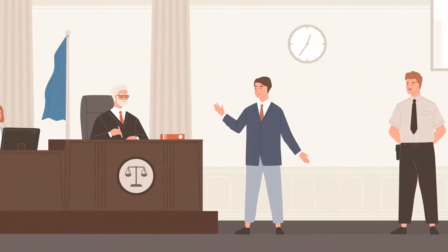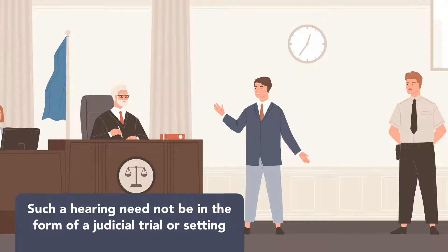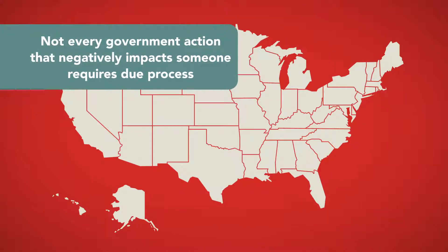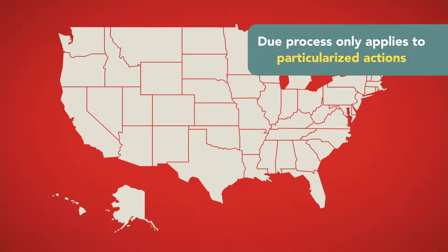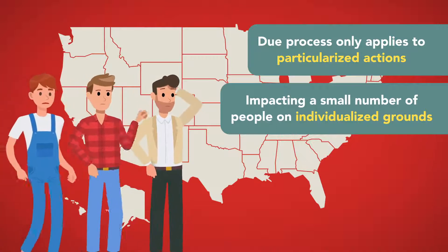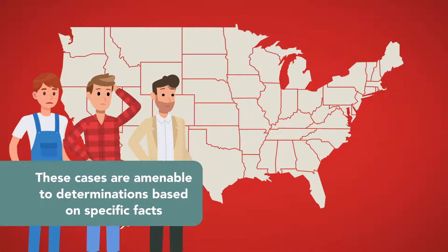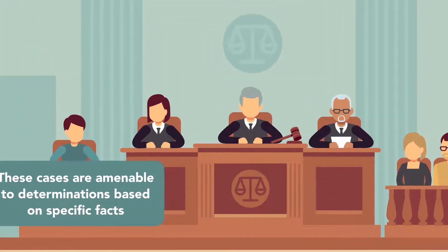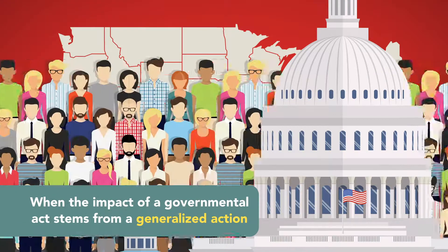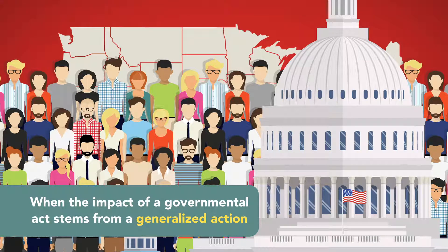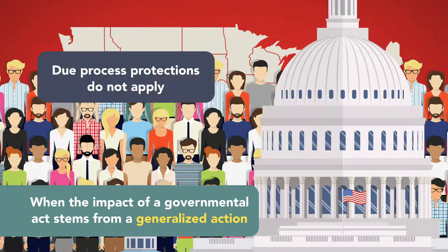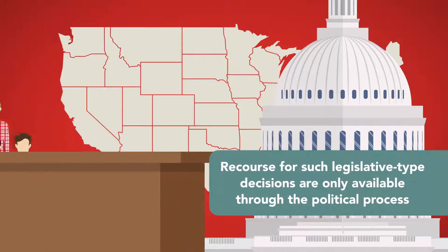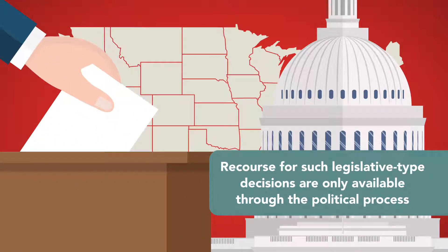While due process requires a hearing to adjudicate the claims, such a hearing need not be in the form of a judicial trial or setting. However, not every government action that negatively impacts someone requires due process. Due process only applies to particularized actions impacting a small number of people on individualized grounds. These cases are amenable to determinations based on specific facts, and so are best determined in adjudicative proceedings. By contrast, when the impact of a governmental act stems from a generalized action applying to many people on the basis of broad policy considerations, due process protections do not apply. Rather, recourse for such legislative-type decisions is only available through the political process.